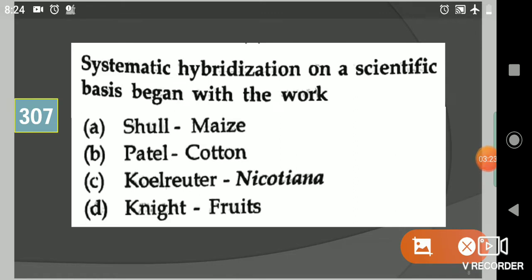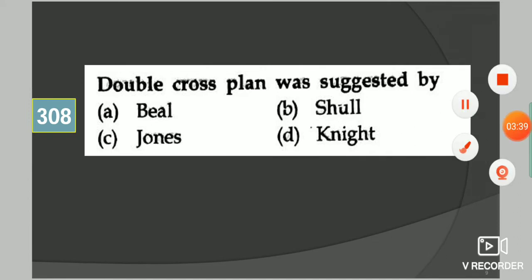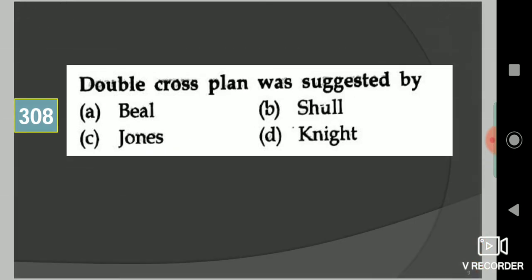Come to the next question: Systematic hybridization on a scientific basis began with the work of? Your options are Kolreuter Nicotiana, or other options. Your answer is Kolreuter Nicotiana, option number C. Come to the next question: Double cross plan was suggested by? Your options are Beal, Shull, Jones, Knight. Your answer is Jones.